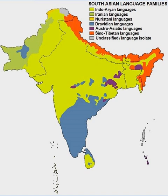The study of the Kharosthi script was recently invigorated by the discovery of the Gandharan Buddhist texts, a set of birch bark manuscripts written in Kharosthi, discovered near the Afghan city of Hadda, just west of the Khyber Pass. The manuscripts were donated to the British Library in 1994. The entire set of manuscripts are dated to the 1st century CE, making them the oldest Buddhist manuscripts in existence.